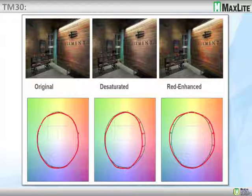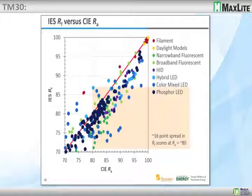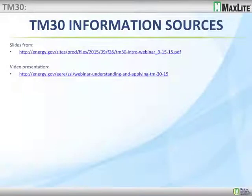Now we look at the IES R fidelity versus the CIE from the standard — the bottom axis versus the vertical axis. We can see a grouping right around 80 CIE from the different types of light sources as manufacturers were trying to hit that general range. All this information is available on the energy.gov website, where you can download it or find more information.